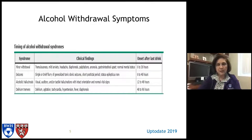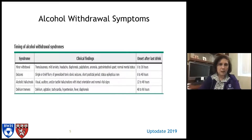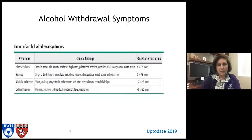This is a table from UpToDate that goes through the different types of alcohol withdrawal syndrome, starting from minor to delirium tremens, which is the most significant and severe, along with clinical findings and onset after the last drink. Minor withdrawal — tremulousness, mild anxiety — and seizures can start as early as six hours from the last drink, up to 36 to 48 hours. Alcohol hallucinosis can start around 12 hours after the last drink but can present up to 48 hours. Delirium tremens onset is 48 hours after the last drink and can be up to 96 hours.